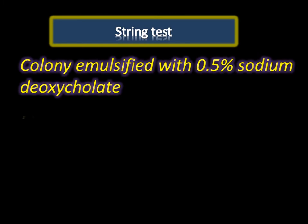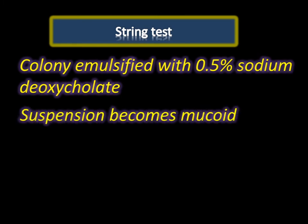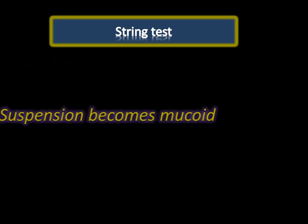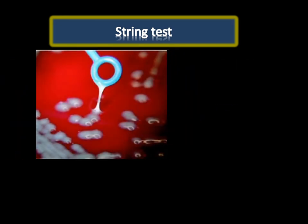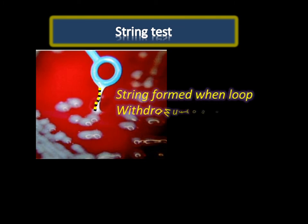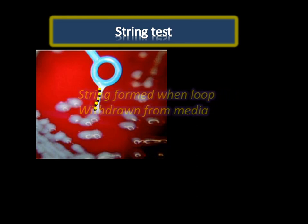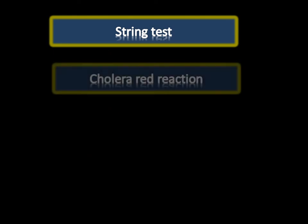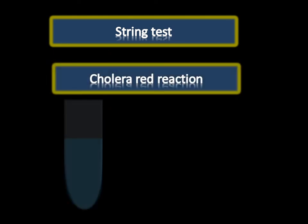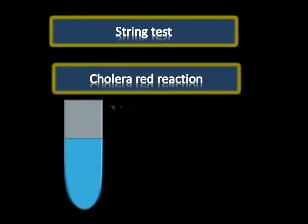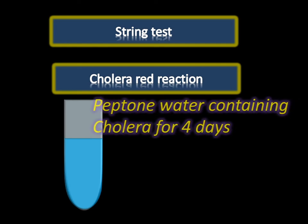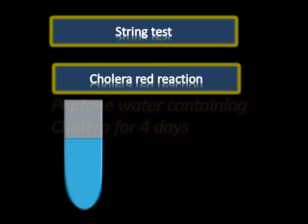There are two tests which help in diagnosis of cholera. One is the string test, in which a colony emulsified with 0.5% sodium deoxycholate is taken. The suspension becomes mucoid and forms a string when a loop is drawn away from the media. In the given photograph, we can see the formation of a string when the loop is withdrawn away from the media.